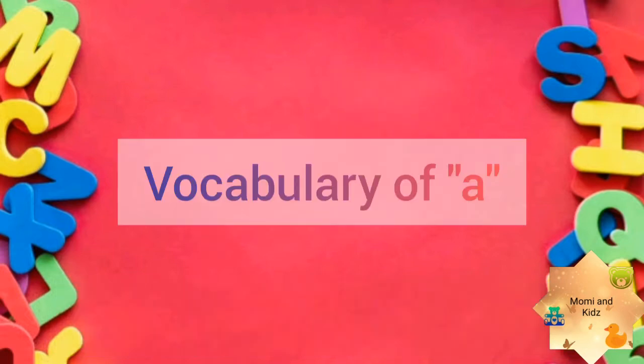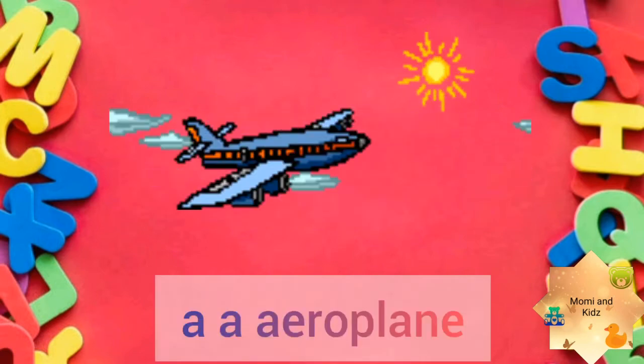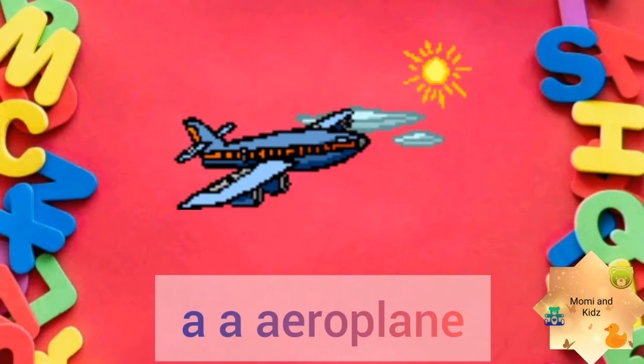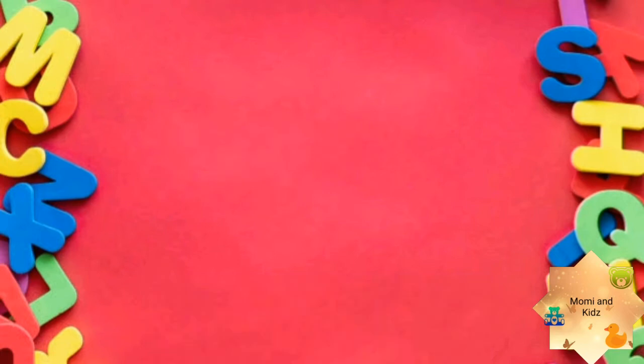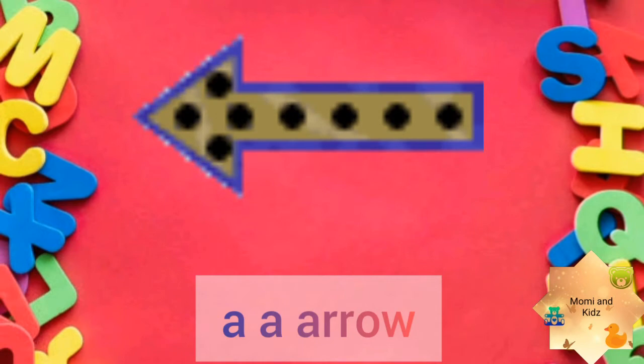Now repeat the vocabulary of A with me. A, A, Aeroplane. A, A, Aeroplane. Say it loud now. A, A, Arrow. A, A, Arrow.